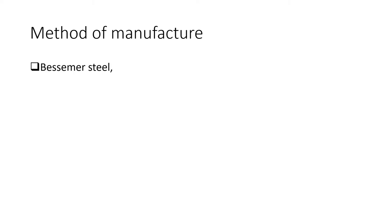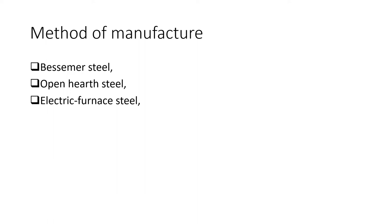Method of manufacture. There are several methods of manufacturing steel. The common methods are: Bessemer steel, open hearth steel, electric furnace steel, and crucible steel. We will define these methods one by one.